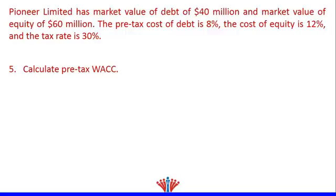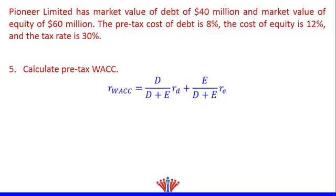Consequently, pre-tax WACC is the market value of debt divided by the sum of market value of debt plus market value of equity — which is the weight of debt — multiplied by cost of debt, plus the market value of equity divided by the sum of market value of debt plus market value of equity — which is the weight of equity — multiplied by cost of equity.